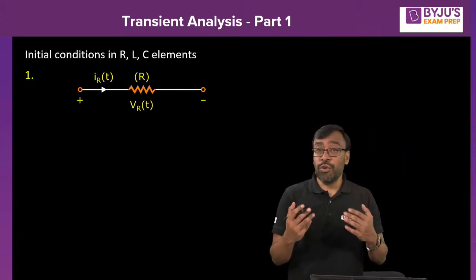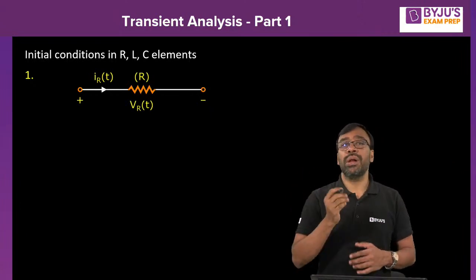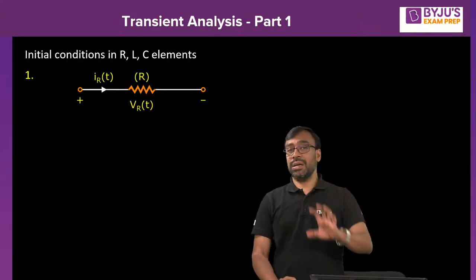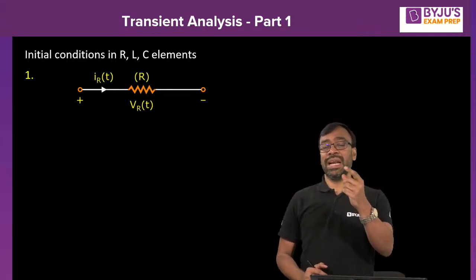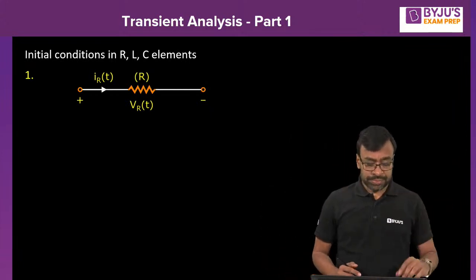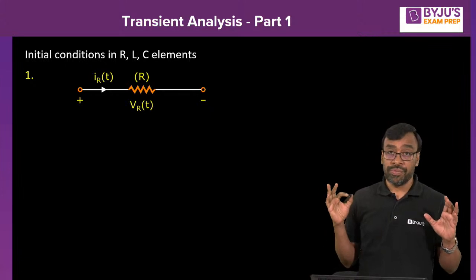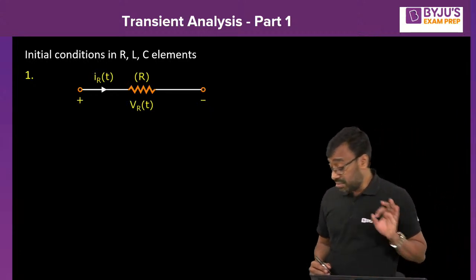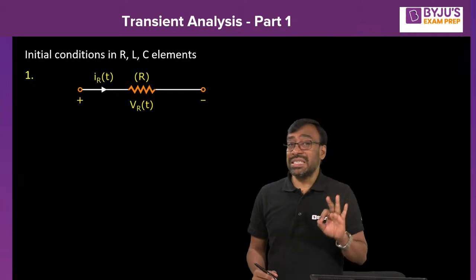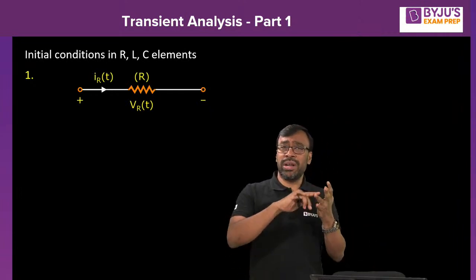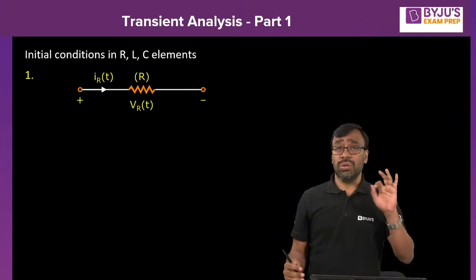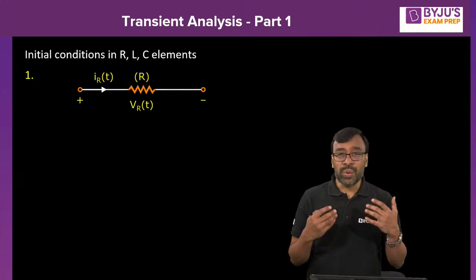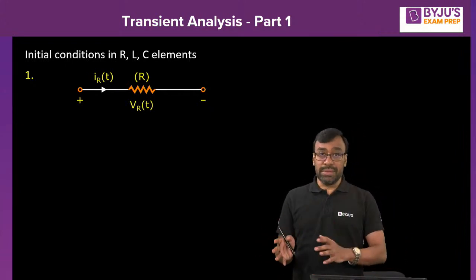The 0⁻, −∞, and +∞ conditions are straightforward to find — just replace resistor with resistor, inductor with short circuit, capacitor with open circuit, and consider before or after switching. The most important and challenging part is finding the t = 0⁺ conditions — the initial conditions. We have three elements and six quantities: current and voltage of resistor, current and voltage of inductor, and current and voltage of capacitor — six quantities total.